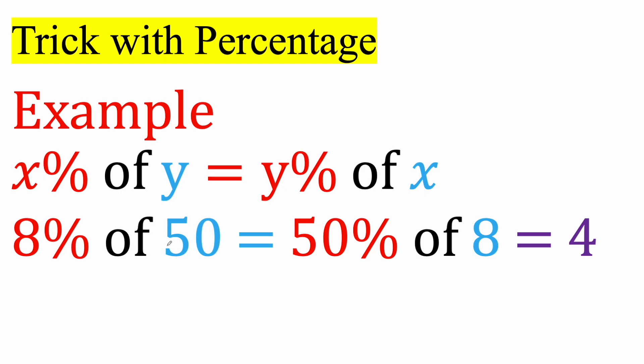So, for example, 8% of 50 is the same as 50% of 8. I would rather deal with this because 50% of 8 is just 4. 8% of 50 is also 4, but maybe you don't see it right away. This form right here, most people see it right away.